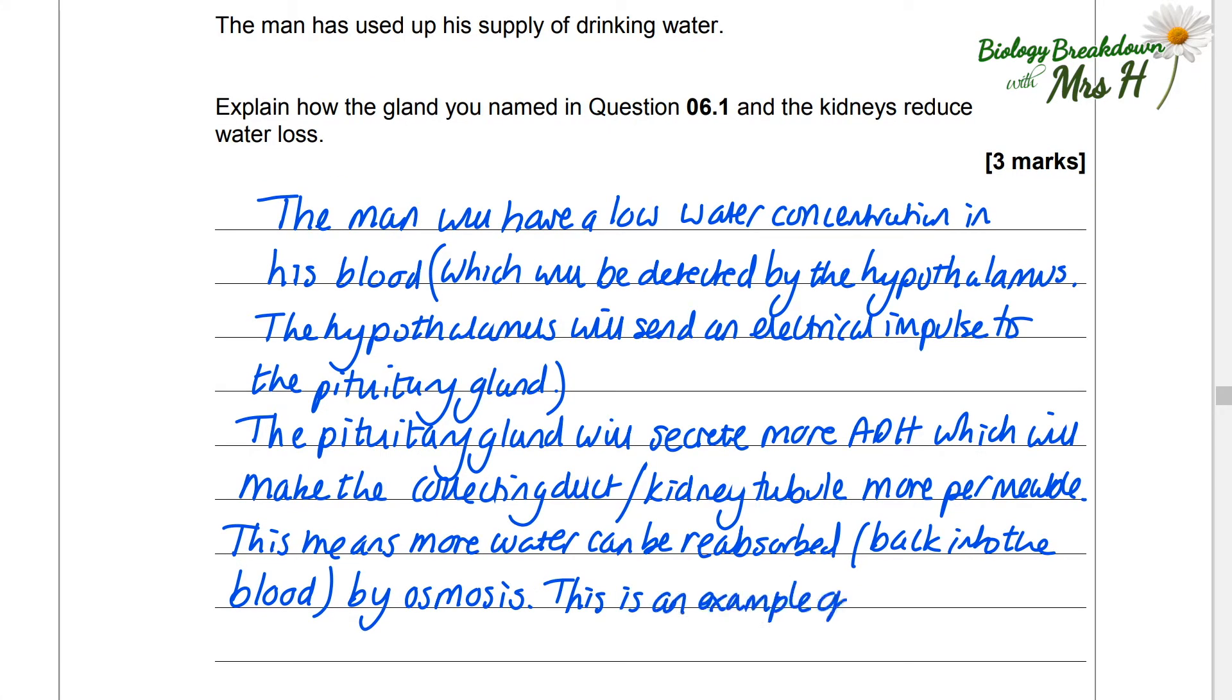And this is an example of homeostasis by negative feedback. Now I've underlined that there because that isn't actually a mark on the mark scheme but quite often there are marks going for that point.